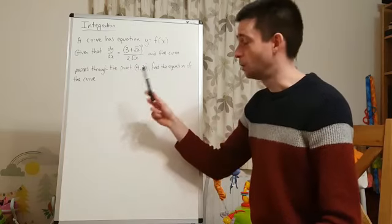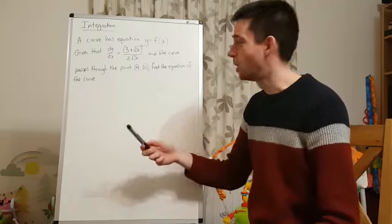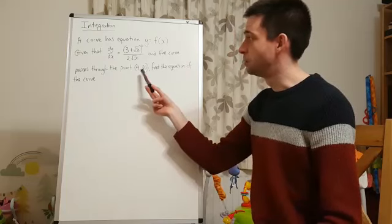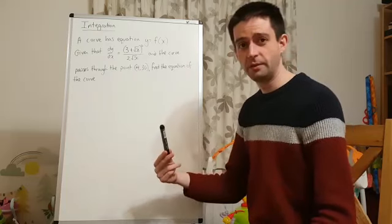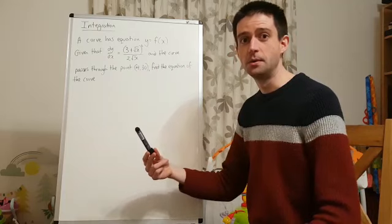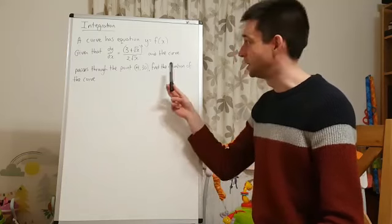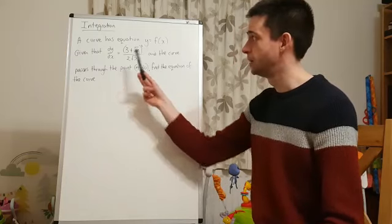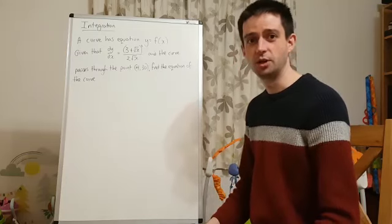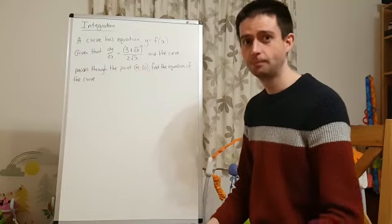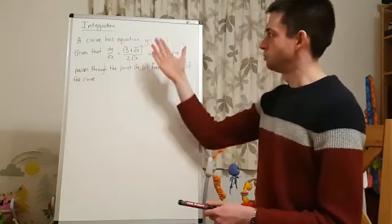And the key information here, or the key difference between now and lesson one, is because we've been given a point on the curve we have enough information to find out the value of the constant c, and therefore we can find the particular curve, we can find the original curve that this is the expression for dy dx for. Okay, so, just read the whole thing.